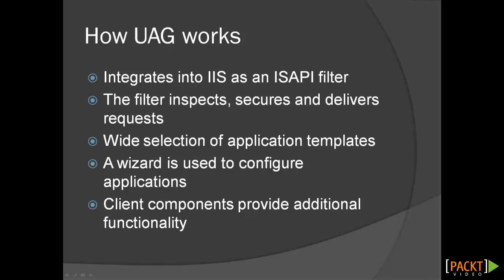To provide the most flexible functionality, UAG contains a wide selection of pre-configured application templates, as well as several generic ones. To publish an application, the administrator uses a wizard to define the application's details, such as the name of the backend server and its TCP/IP port. Then UAG takes care of the rest. UAG also contains special client components which provide additional functionality, and we will discuss them in more detail at the end of this module.